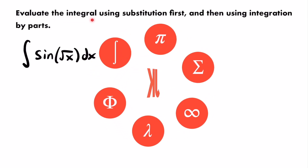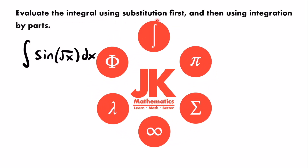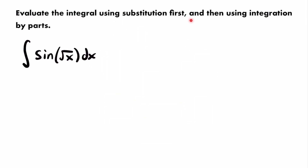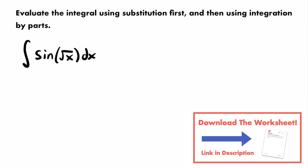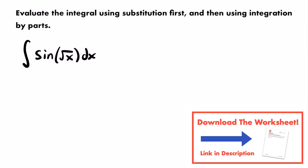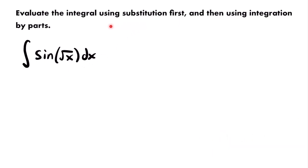We want to evaluate the integral using substitution first, and then using integration by parts. Our integral is the integral of sine of the square root of x, dx. In order to evaluate this integral, as the problem says, we need to use substitution first — meaning u-substitution.